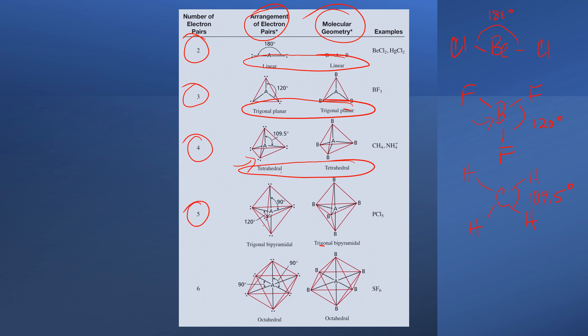Five means we have something like PCL5, five chlorine atoms bonded to our central phosphorus. This geometry is going to be trigonal bipyramidal.